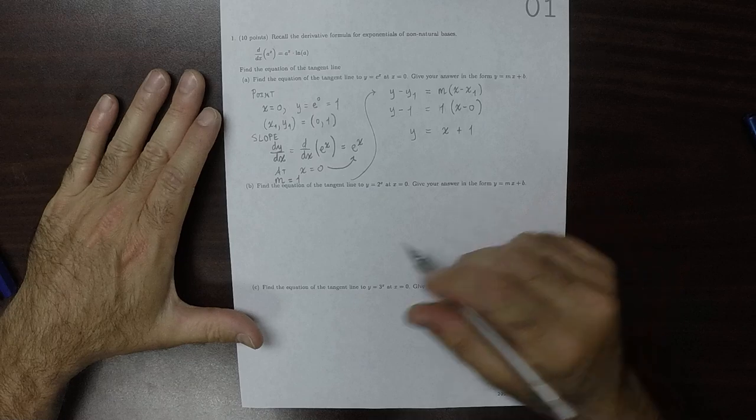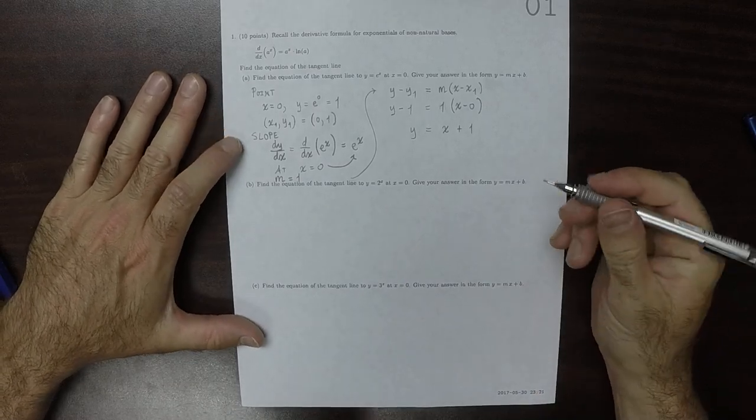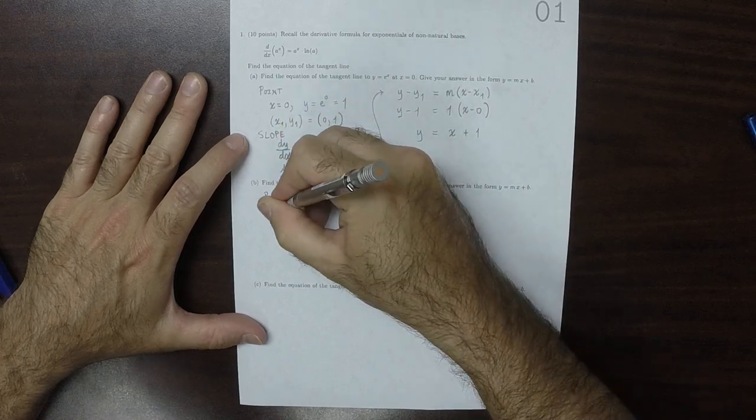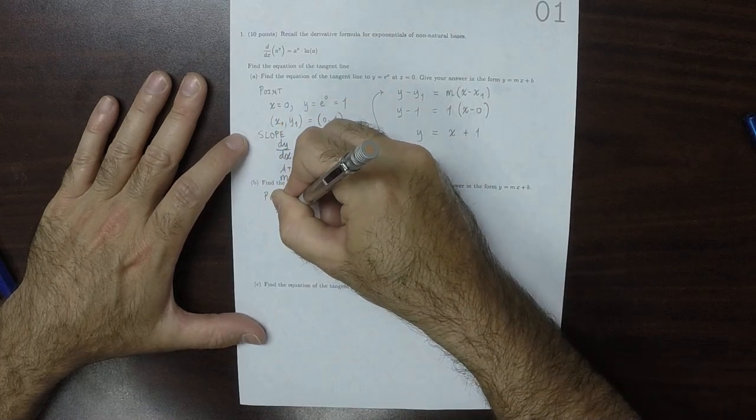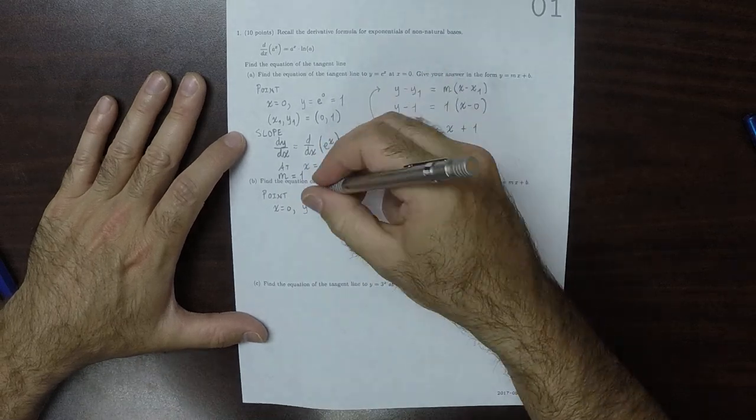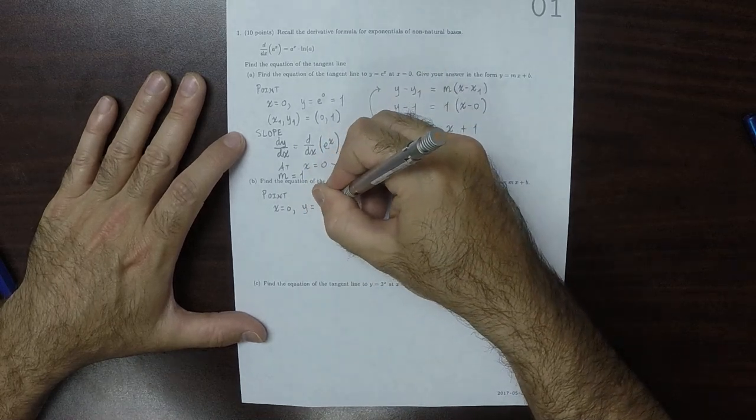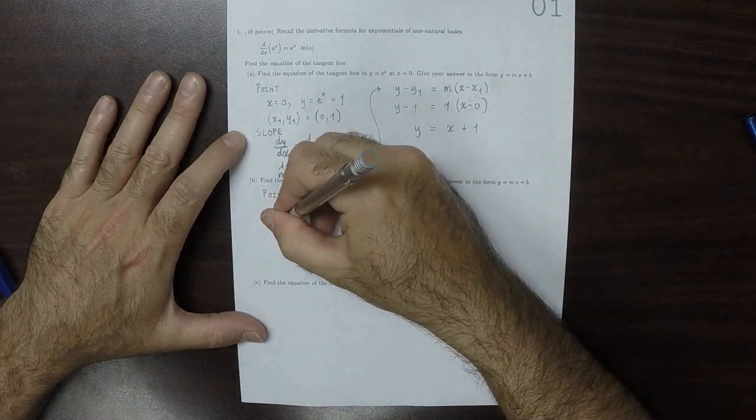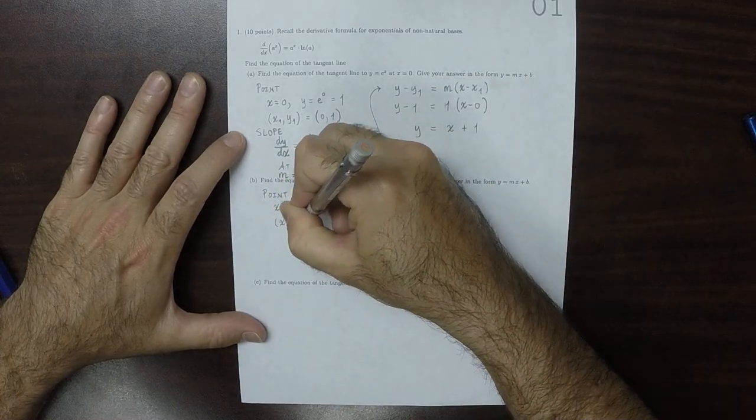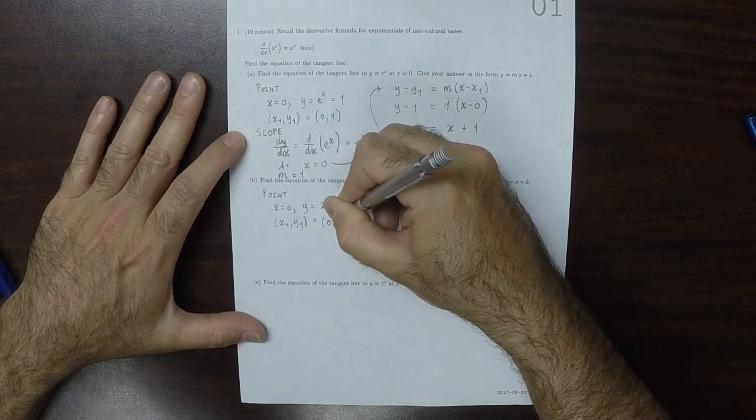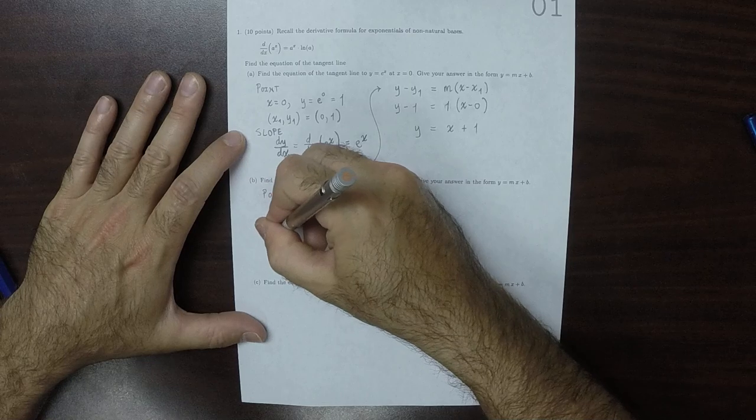Part b is just the same, except for a slightly different exponential. The point will be the same, because we're given that x is 0. And then y will be 2 to 0, which is 1. So that means the point x1, y1 is 0, 1. And then the slope, the slope will be different.